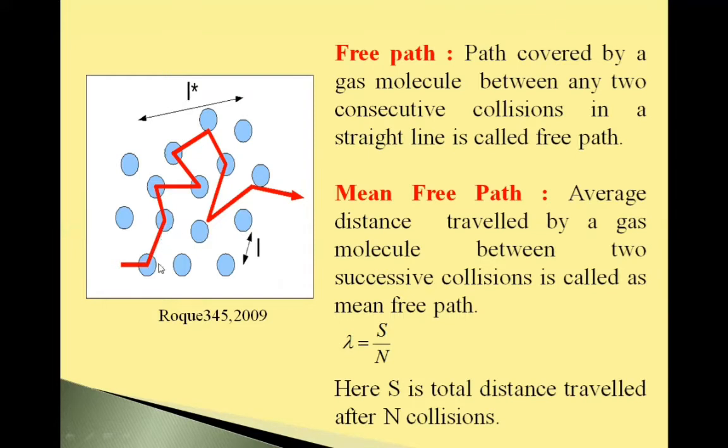Now the free paths shown here are not same in length. So we have to use concept of mean free path. Average distance travelled by gas molecule between two successive collisions is called mean free path. λ = S/N, where S is total distance travelled by the molecule after N collisions.